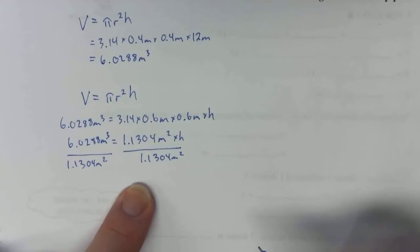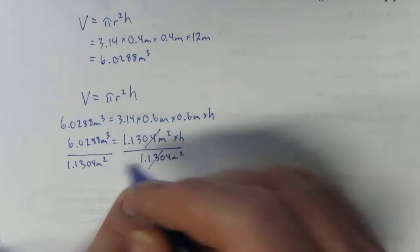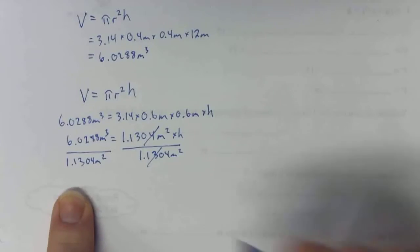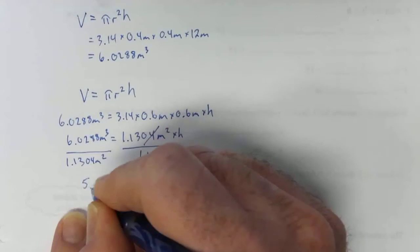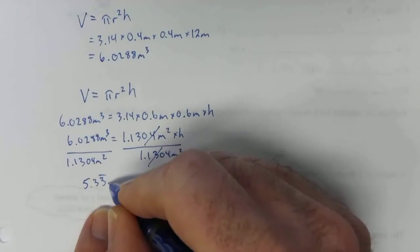When we do that, that divides out to that, leaving you with just h on the right. And then the number on the left, 6.0288 divided by 1.1304, looks like it works out to 5.33 repeating meters.